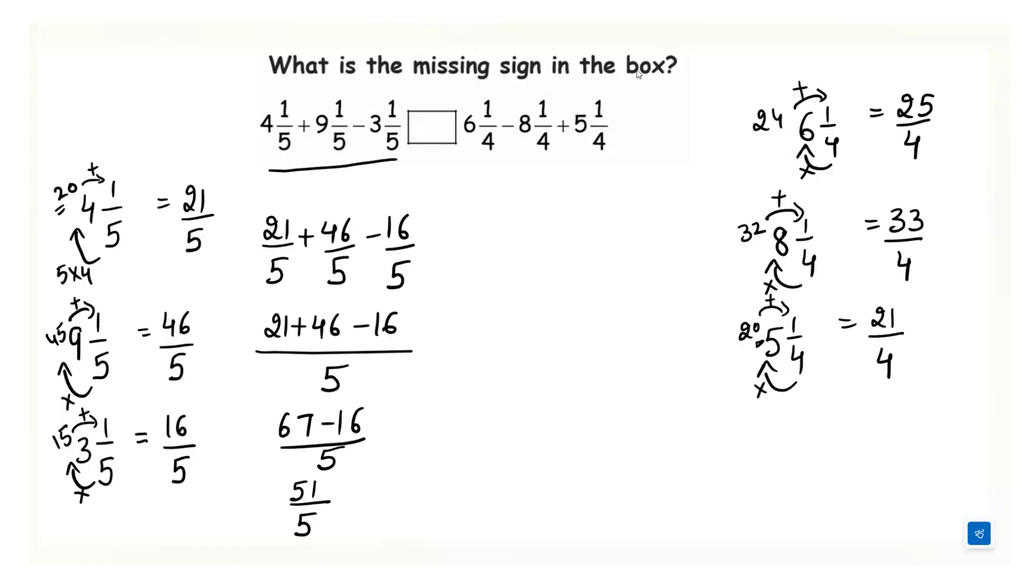So we will write down here in place of 6 1 over 4, 25 over 4. Then the next one is 33 over 4. Then next one is 21 over 4. Now we have to write the positive fractions together and negative fraction we have to write at the end. Now since the denominators are same we write down the denominator only once, then plus 21 minus 33. So we will get here 46 minus 33 over 4 which is equals to 13 over 4.